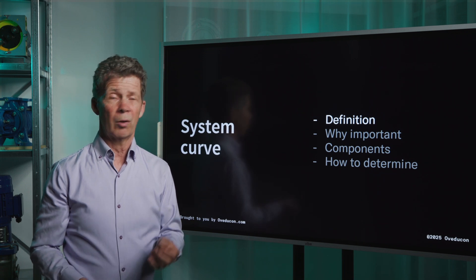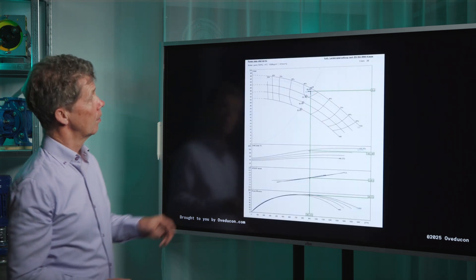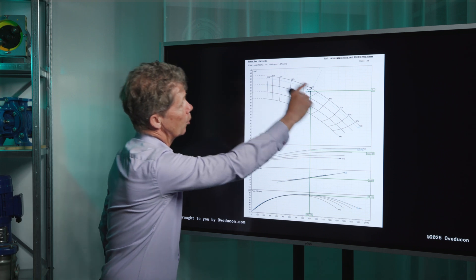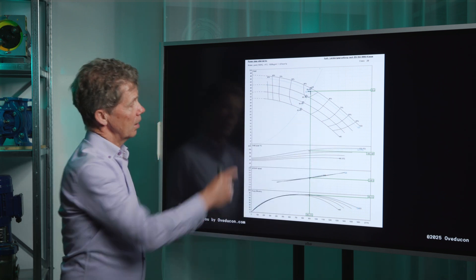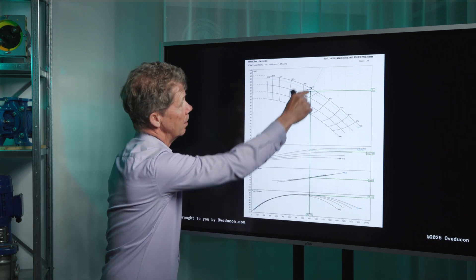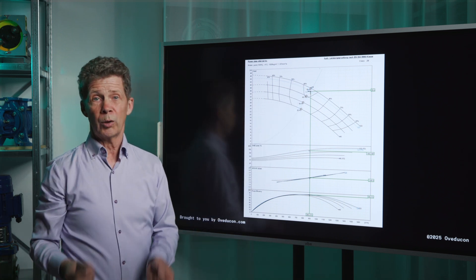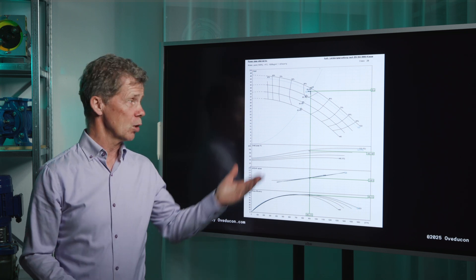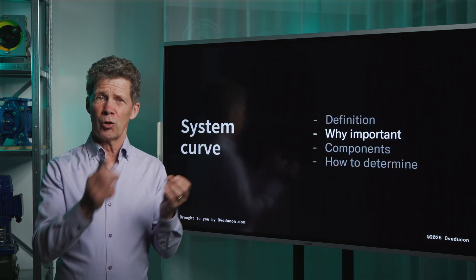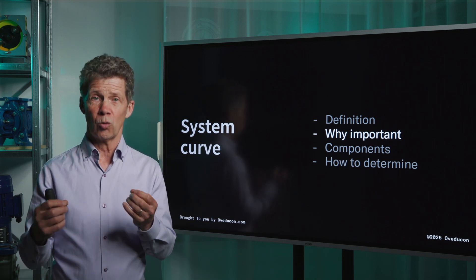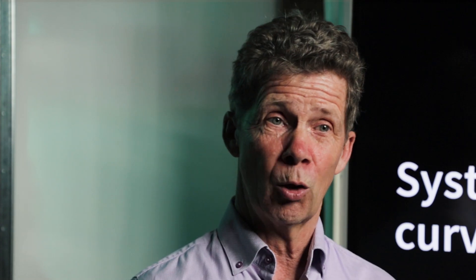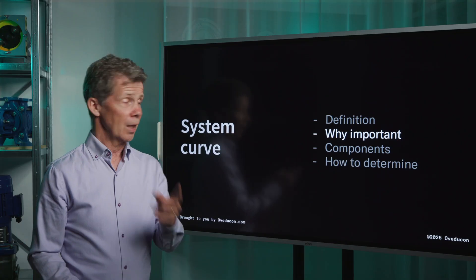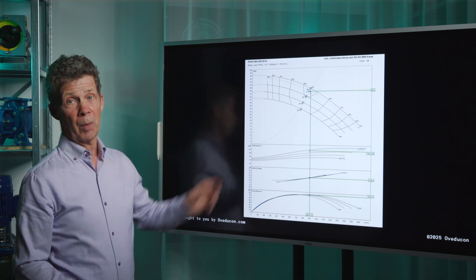We have a pump curve right here. Here you see the pump curve lines, and this blue line here, that's what we call a system curve. It is very important to know about your system curve, and I will tell you why. Because your pump curve and your system curve always work together, and that is because you have to match your pump with your system, like you see here in this pump curve.